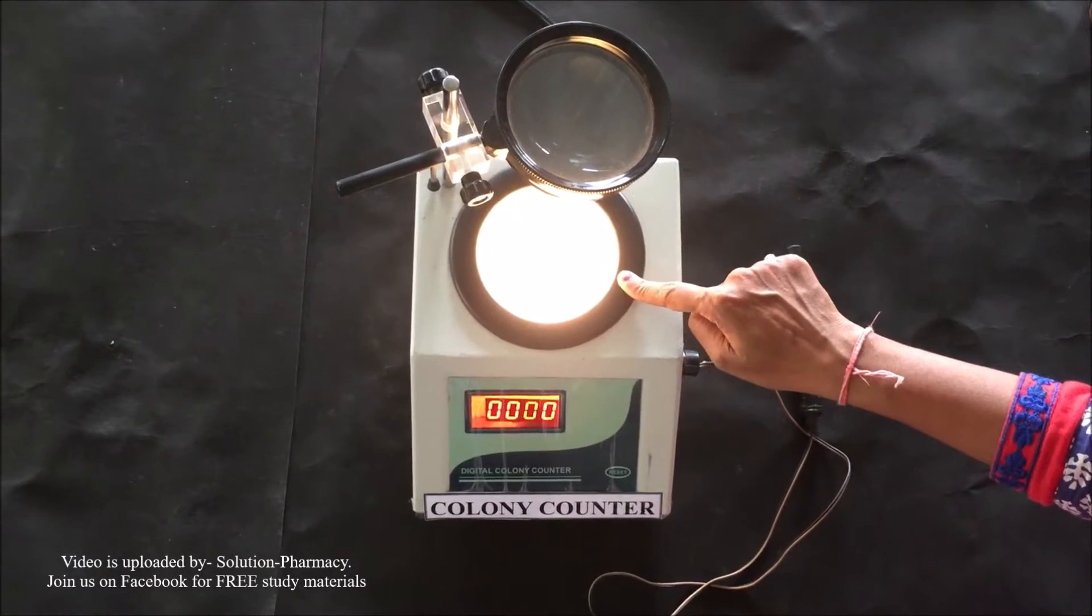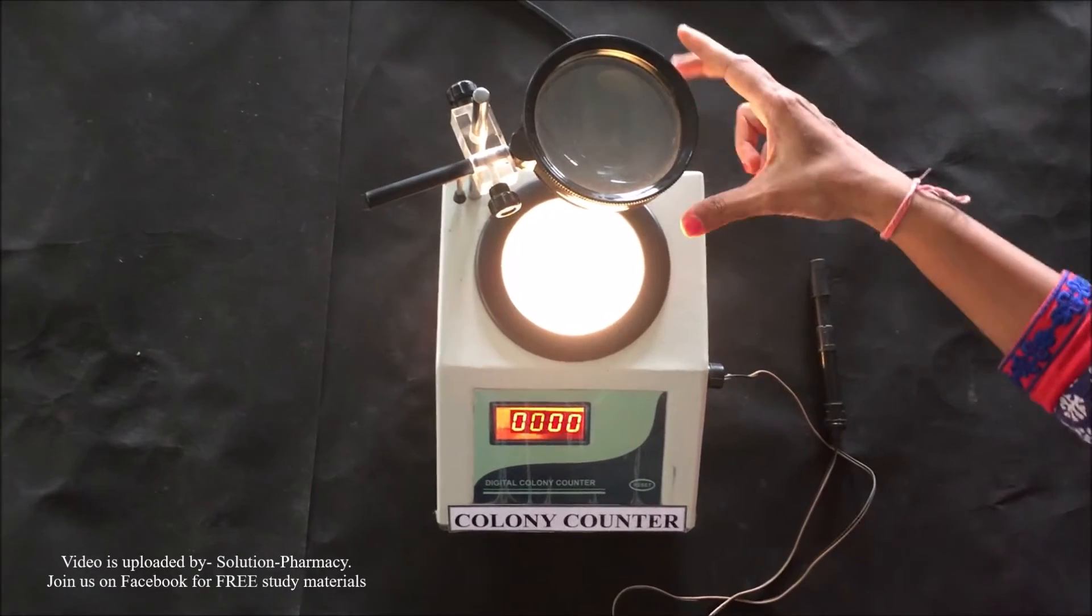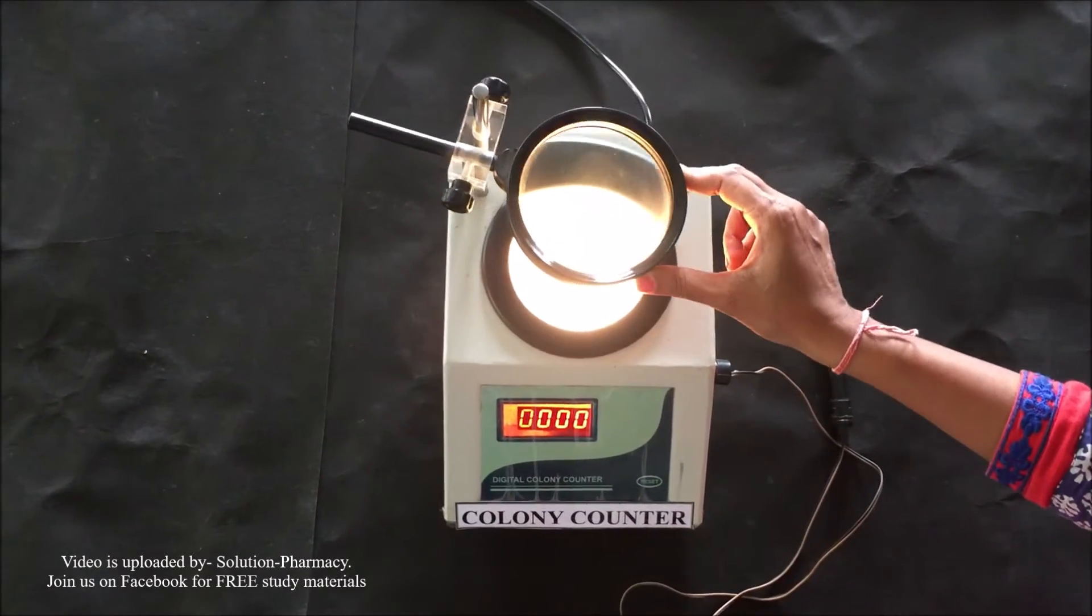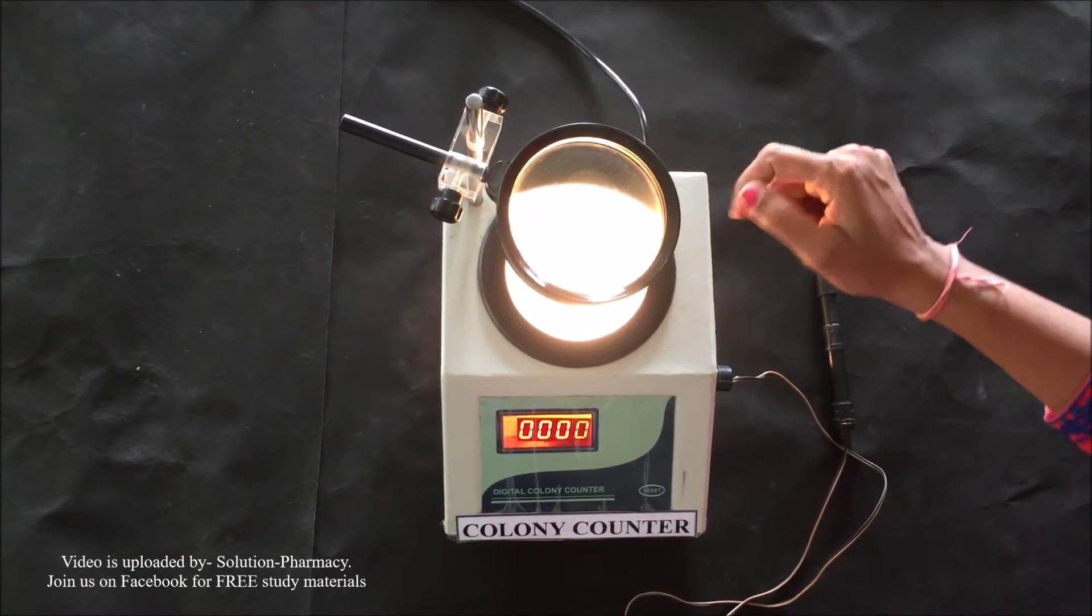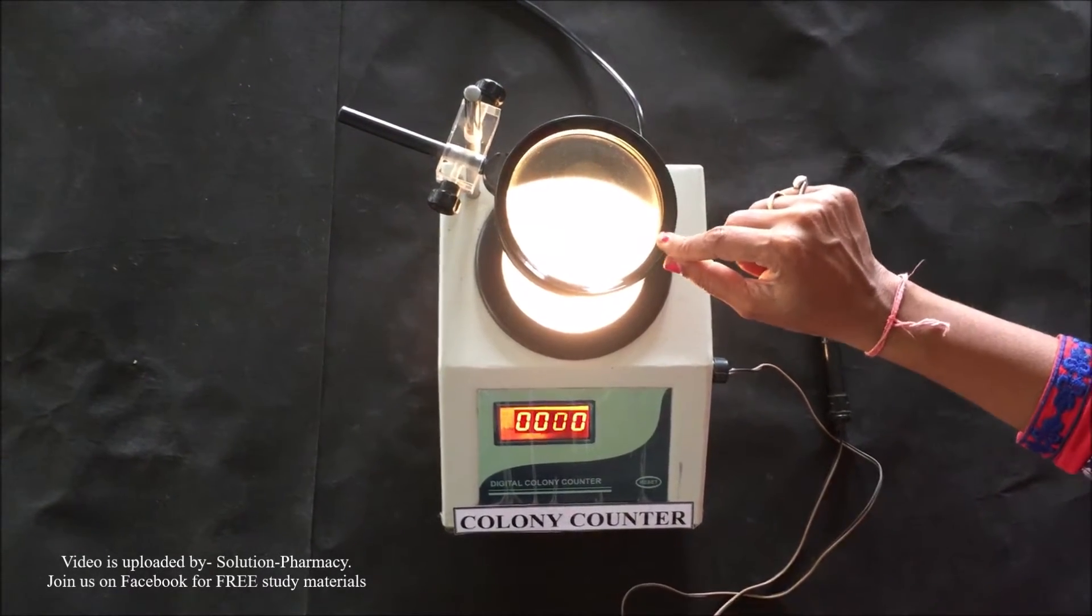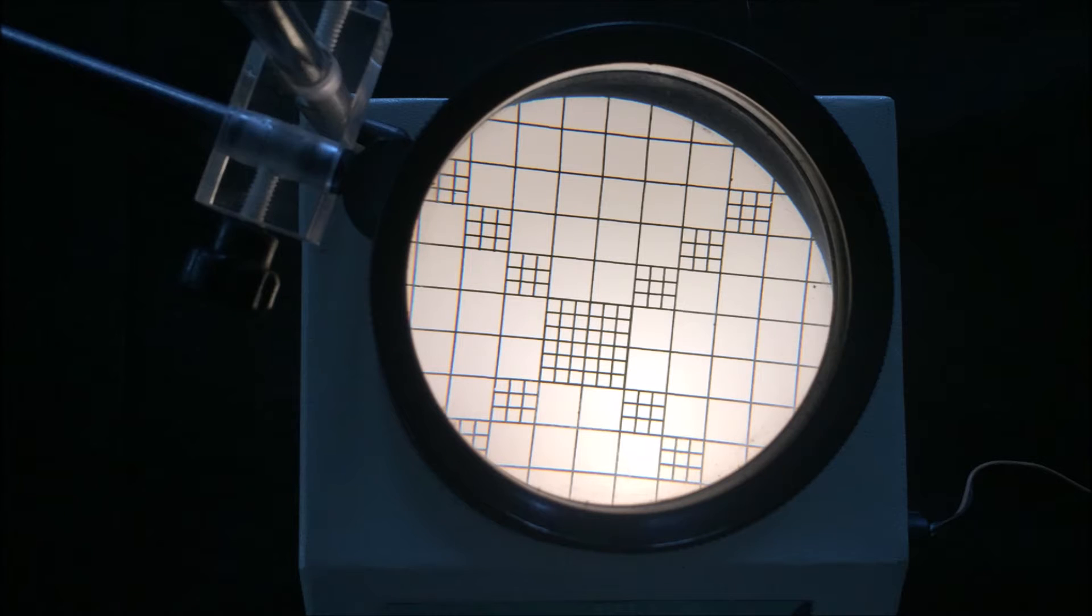This is the magnifying lens. Adjust the magnifying lens at the time of counting, which will magnify the colonies on the petri dish so that you can easily see and count them. You can see small squares on the illuminating surface called the squares of Wolfhugel grid, by which you can easily differentiate the colonies.